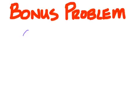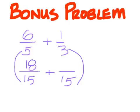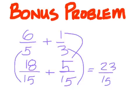The bonus problem is six over five plus one over three. Solution for the bonus should have a denominator of fifteen. You're multiplying by three here so that's where we get the eighteen from six times three. Multiply by five there one times five is five. Twenty-three over fifteen.